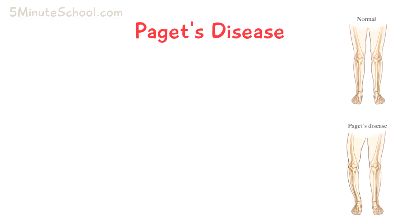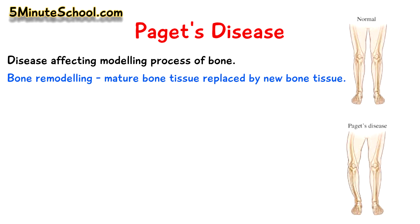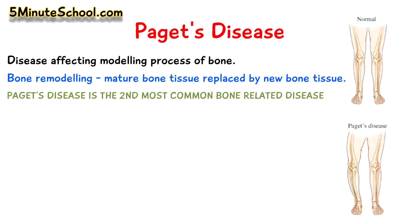In today's video we're going to be talking about Paget's disease, and how this is a disease which affects the modelling process of bone. Normally old bone cells are replaced by new bone cells in a process called bone remodelling, however this process in Paget's disease is disrupted. Paget's disease is the second most common bone disease after osteoporosis, and the incidence of it increases with ageing. Approximately 8% of the population over 85 have the disease.